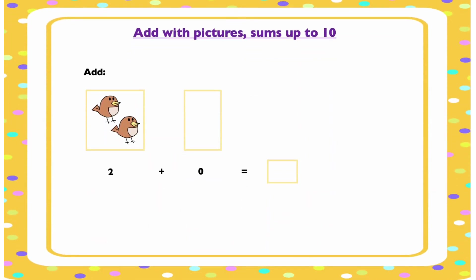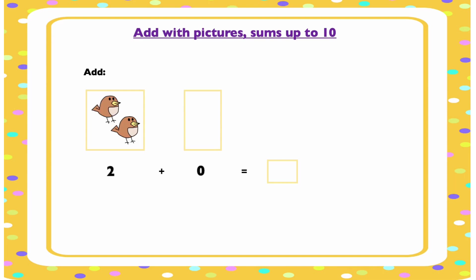Let's look at this example. There are two groups of birds here. We have two birds in the first group and none in the second group. How many are there altogether? Let's count: one, two — there are two birds. When you add zero to a number it does not change the number; the number will still remain the same. So the sum of two and zero is two.